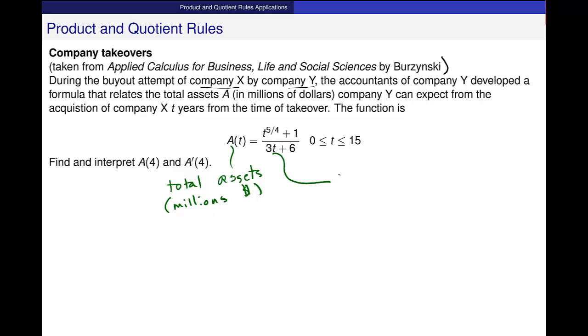T years, so this is in years from time of takeover. We have assets as a function of time. The input is time, and then we get assets for this new Company Y. We have a limit on the domain of the function. T is only good for 15 years, 0 to 15. The question says find and interpret A(4) and A'(4).